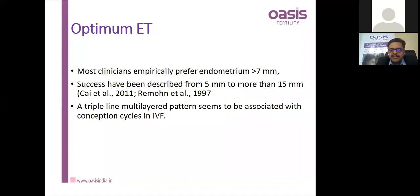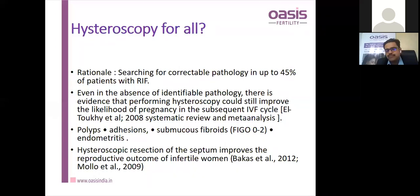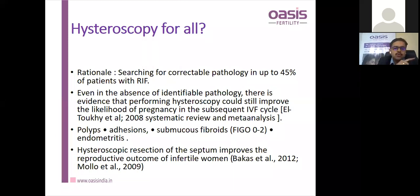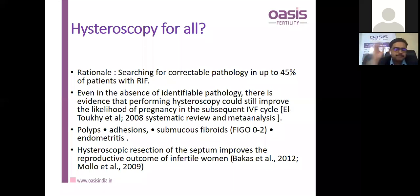Is hysteroscopy recommended for all? Definitely not. But in RIF cases, hysteroscopy will diagnose around 45% correctable pathology and is therefore recommended — it can diagnose polyps, adhesions, submucous fibroids, and chronic endometritis, many of which may be missed even on well-performed 3D ultrasonography. The see-and-treat principle applies: see inside the cavity, treat the cause, and improve IVF outcomes. Hysteroscopic resection of septum also improves reproductive outcome per multiple studies.